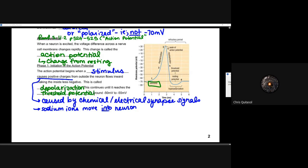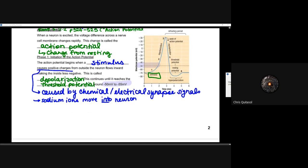Sodium ions will flow into the cell at that initiation of the action potential. It's going to make it less negative, and this will start the whole initiation of the action potential. This is called depolarization. This continues until it reaches the threshold potential of approximately negative 50 to negative 55 millivolts. We're increasing the positive charge of the inside of the cell until it reaches that threshold potential at about minus 50 millivolts.